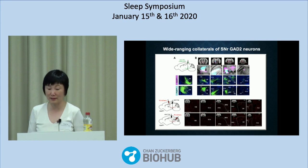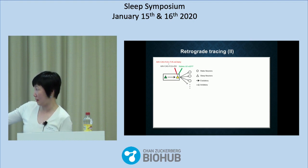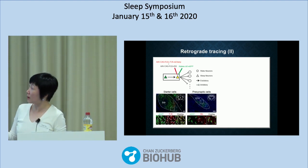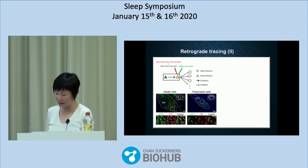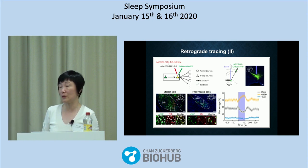Basically, it's the same population of neurons that send axon collaterals to both motor regions and brain arousal control regions. As promised, we traced one more step back to look for excitatory input to the SNR GAD2 neurons. The strongest excitation came from the STN — the subthalamic nucleus. When we activated these glutamatergic STN neurons, we also saw an increase in sleep and decrease in wakefulness.